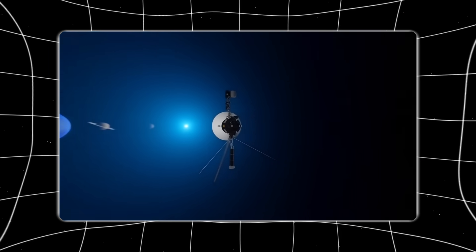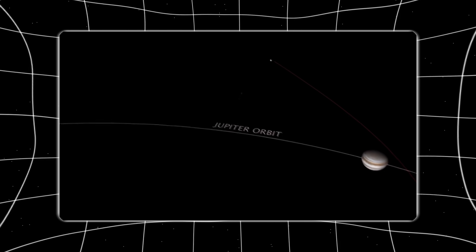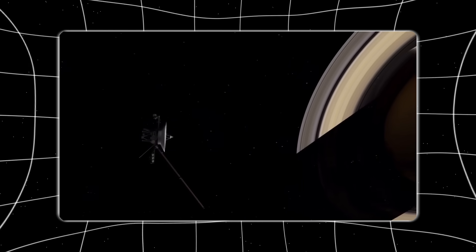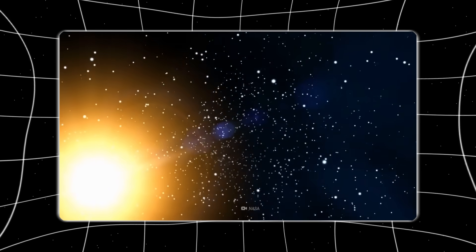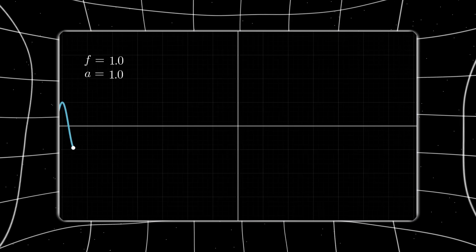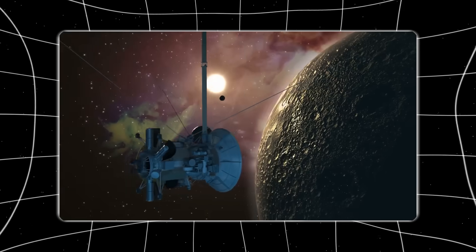Even so, the available power has been declining steadily for decades. Engineers have had to shut down instruments, heaters, and backup systems one by one, carefully rationing every remaining watt. And yet, against all expectations, Voyager 1 continues to transmit usable scientific data.